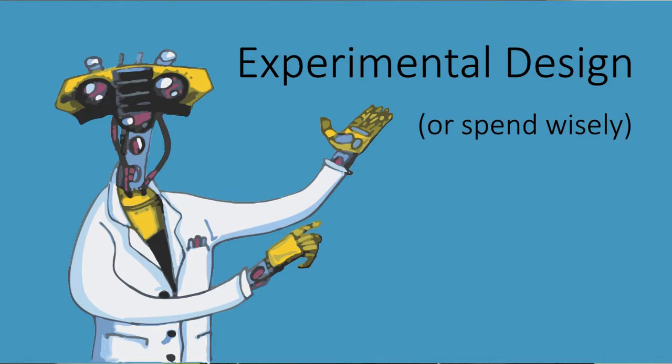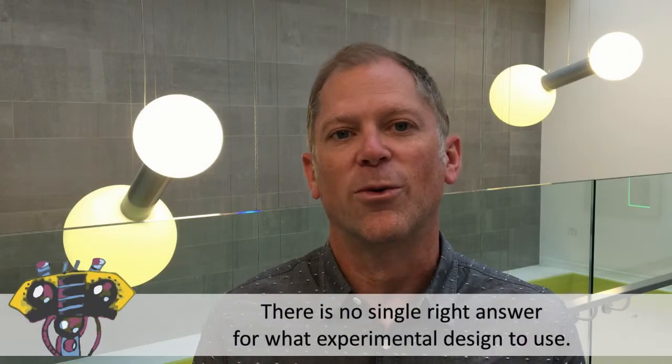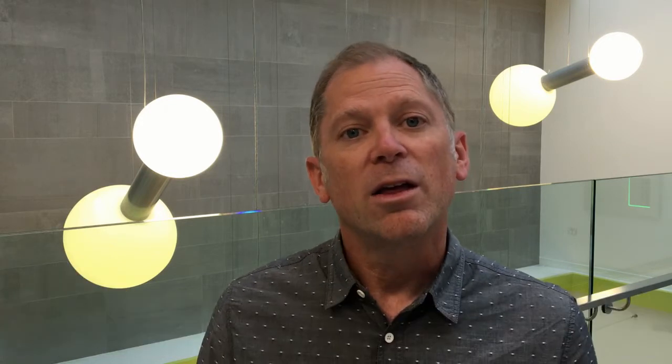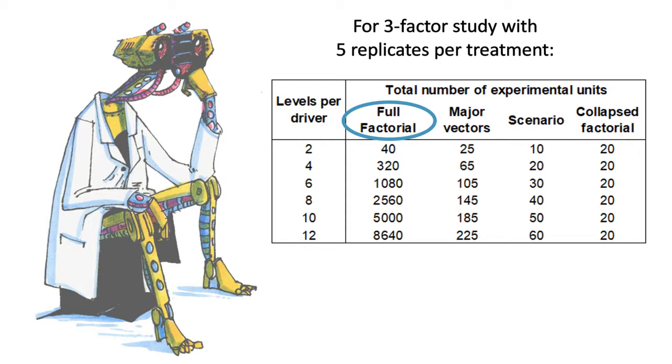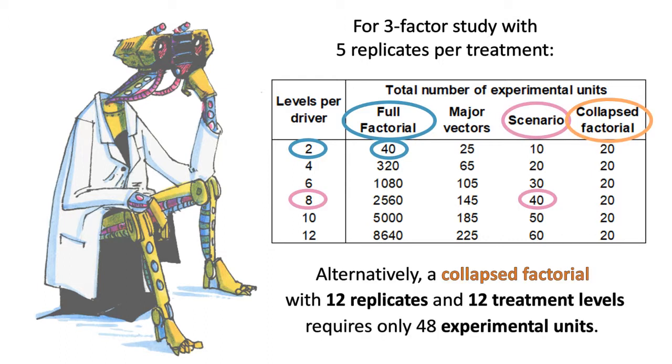One of the main take-home points is that there is no single right answer for what experimental design to use. You'll want to think about what question you really want to answer, and which design is going to work best for you within the resources you have. For example, as we can see in the table, if you want to look at a three-factor full factorial study, and you need five replicates to have enough power, even two treatment levels per driver requires 40 experimental units. With a similar number of experimental units, you could consider a scenario with eight treatment levels and five replicates, or a collapse factorial with 12 replicates and 12 treatment levels.